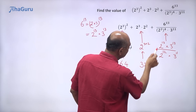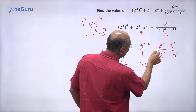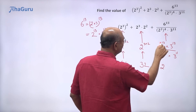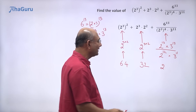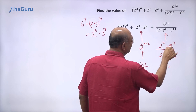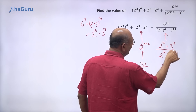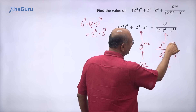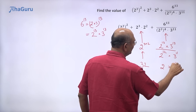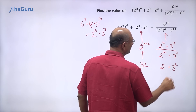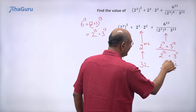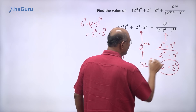Now, 2 power 13 divided by 2 power 12 is 2 to the power of 13 minus 12, which is 2 to the power of 1. And 3 power 13 divided by 3 power 11 is 3 to the power of 13 minus 11, which is 3 squared. So this part becomes 2 into 3 squared.